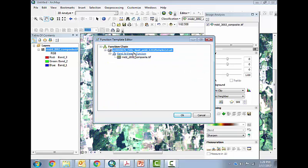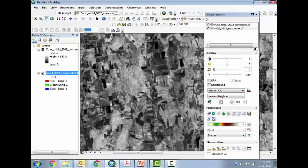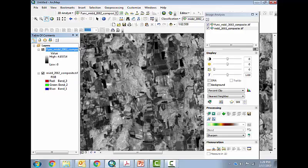And then I'm going to hit OK. And you see now this says band arithmetic function. And I'm going to hit OK again. It's going to execute it. And it's now made this new layer that is actually a ratio of band 4 over band 3.